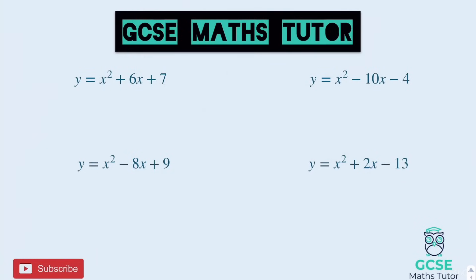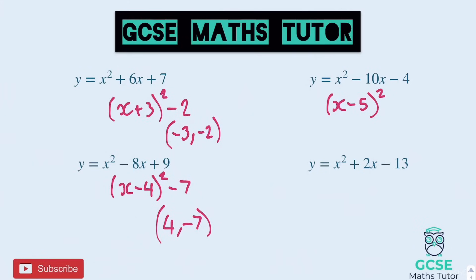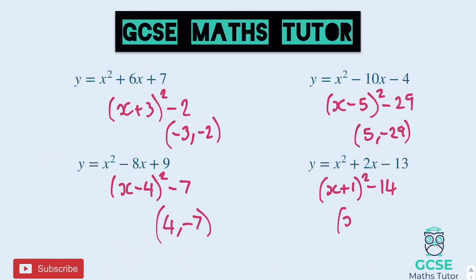Here are the answers to the four practice questions. First: (x + 3)² — expanding gives nine, we want seven, so minus two. Turning point: (−3, −2). Second: (x − 4)² — expanding gives 16, we want nine, so minus seven. Turning point: (4, −7). Third: (x − 5)² — expanding gives 25, we want negative four, so minus 29. Turning point: (5, −29). Last one: (x + 1)² — expanding gives one, we want negative 13, so minus 14. Turning point: (−1, −14).